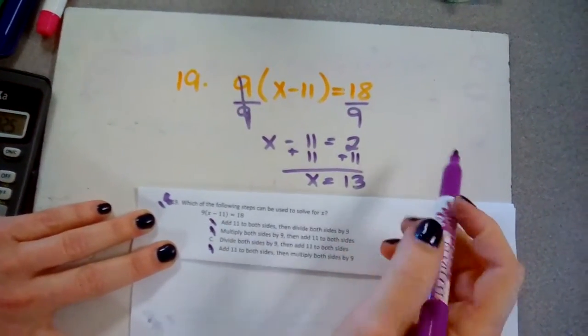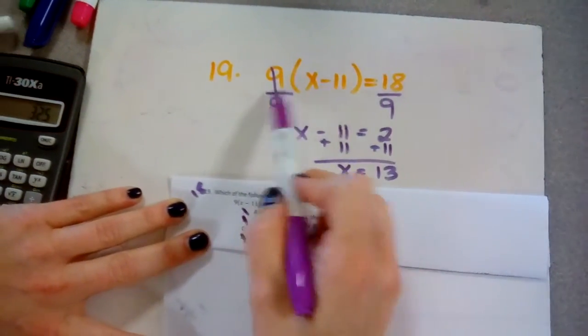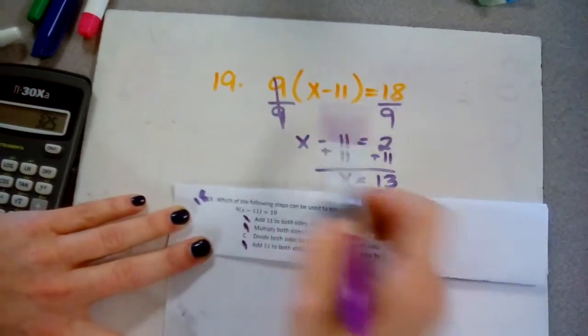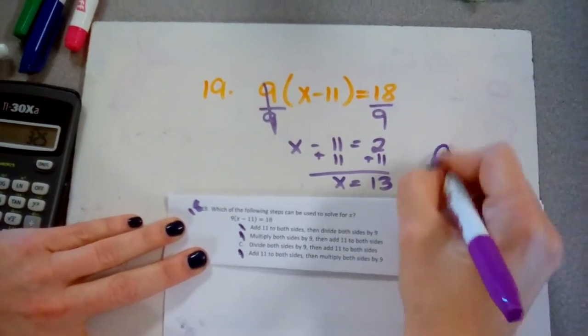So the only one that would work, and it's actually a trick in math, it does not work all the time, it works with a problem like this, would be dividing both sides by 9 in order to eliminate rather than needing to distribute. So your answer is C.